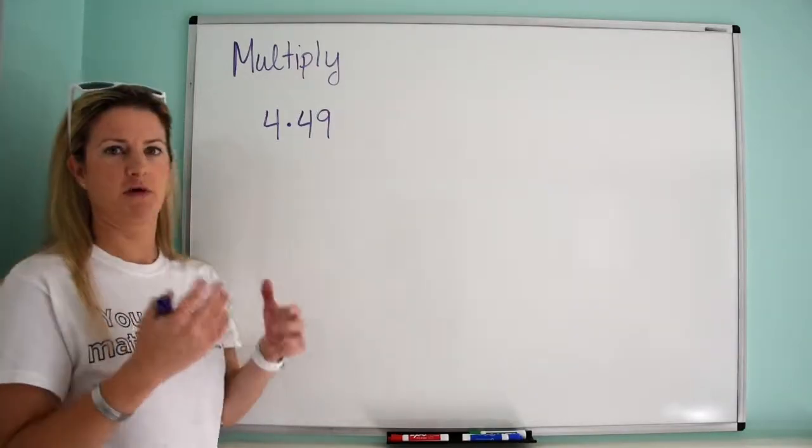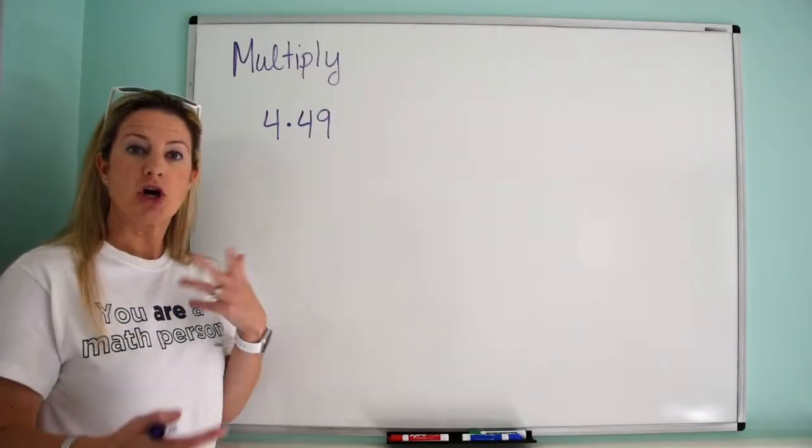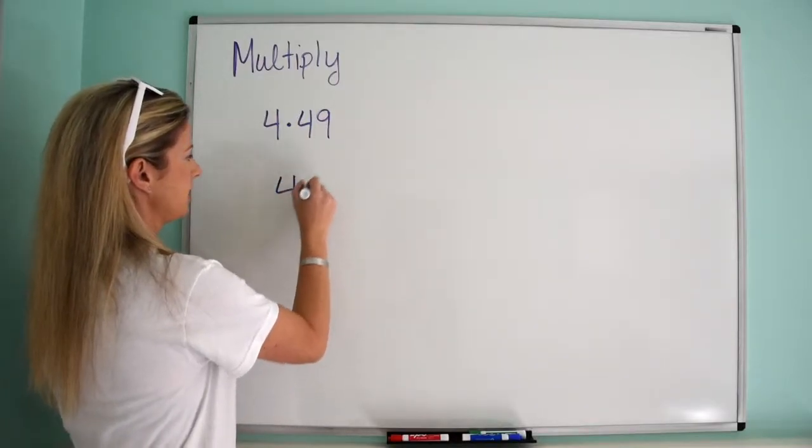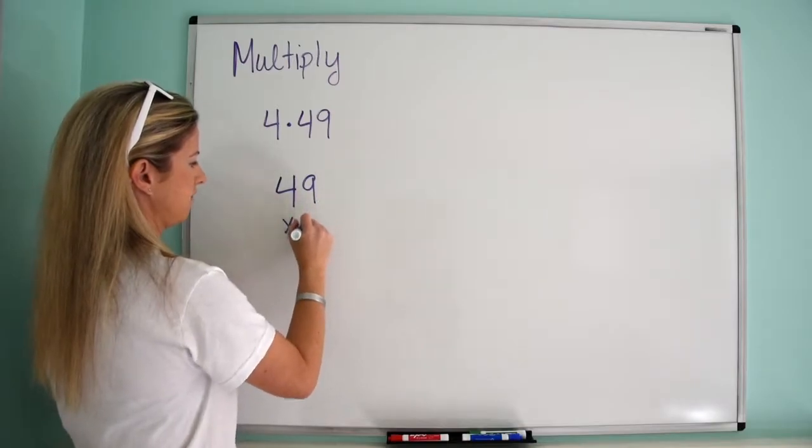All right, so we're doing 4 times 49. So we could do this in the way that we were taught in elementary school, where we have 49 and we want to multiply it by 4.